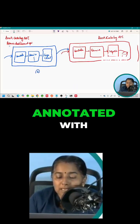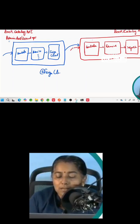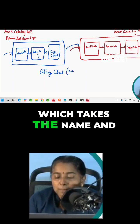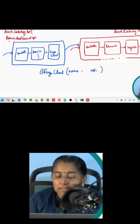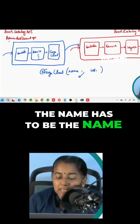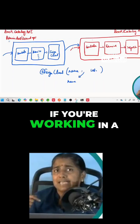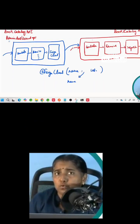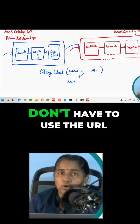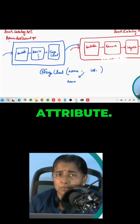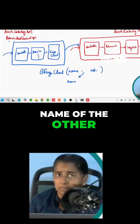The interface should be annotated with @FeignClient, which takes the name and URL parameters. The name has to be the name of your microservice. If you are working in a microservice environment together with Eureka as your service discovery, you don't have to use the URL attribute — it is enough to provide the name of the other microservice.